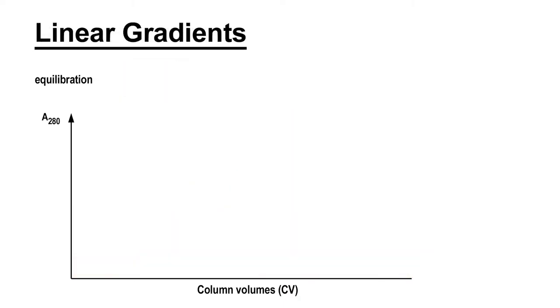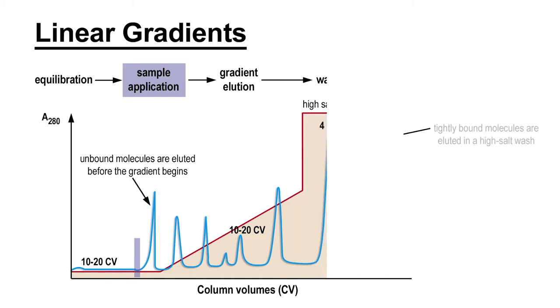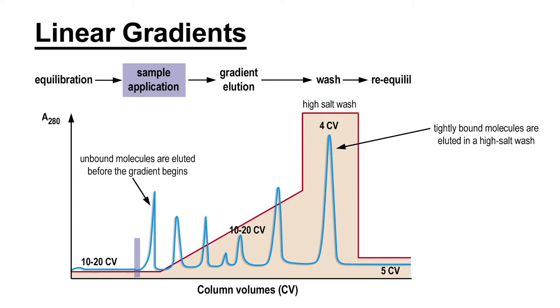When the linear gradient approach is used, the salt concentration of the first buffer is increased to selectively remove the tightly bound target protein. After the gradient is run, the second buffer is passed over the column to ensure that all proteins are eluted. Samples, which are called fractions, are collected through the process and can then be analyzed for the presence of the protein.